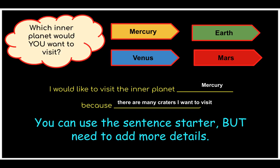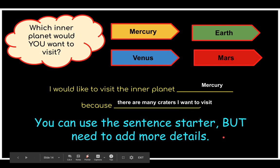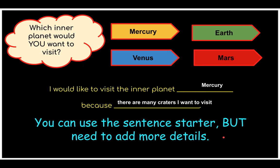Boys and girls, those are the four inner planets of our solar system. When you're done with this video, open up a Google document and write an opinion statement about which inner planet you would want to visit — Mercury, Venus, Earth, or Mars. There will be a sentence starter to help you get started: 'I would like to visit the inner planet ___ because ___.' For example: 'I would like to visit the inner planet Mercury because there are many craters I want to visit.' You can pick any one of the four planets and give a reason why. After the sentence starter, you need to add at least one additional sentence to give more details about why you want to visit that planet.